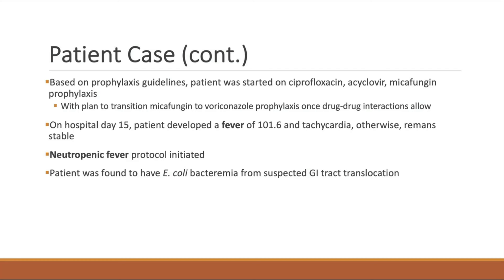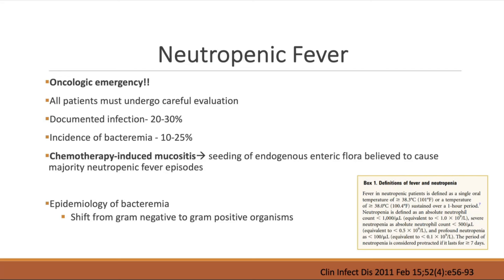The following day, the patient is found to have E. coli bacteremia suspected from GI translocation in the setting of profound neutropenia. Neutropenic fever is definitely an oncologic and ID emergency. When you get one of those calls in the middle of the night, you must ask certain questions to determine if you are dealing with a high-risk versus a low-risk patient.